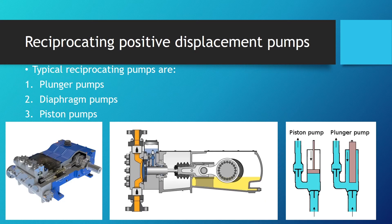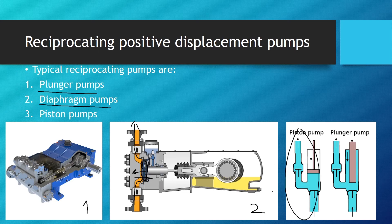In our next lessons we'll cover each pump type individually. The typical reciprocating pumps are plunger pumps, diaphragm pumps — which we will not be covering — and piston pumps, which we already discussed.